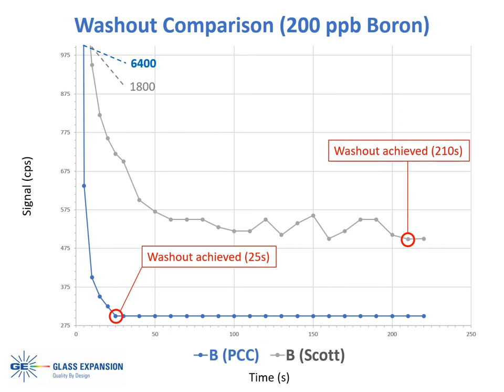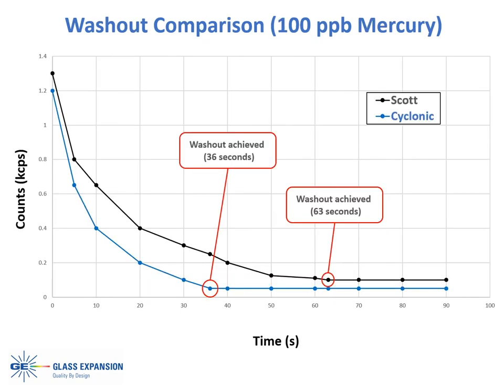Here we compared the washout efficiency of our PCC kit to a Scott-style spray chamber. The same 200 ppb sample was aspirated until the signal stabilized, followed by the rinse solution; timing began as soon as the rinse solution was introduced. The boron signal with the PCC kit started out three times higher than the Scott but achieved a washout time eight and a half times faster and returned to a lower signal than the Scott. A second washout comparison using a 100 ppb mercury solution showed mercury washed out nearly twice as fast with the PCC kit as it did with the Scott-style spray chamber.